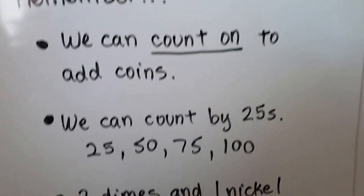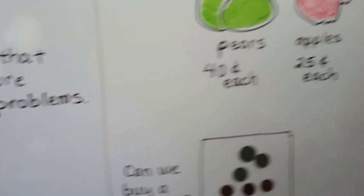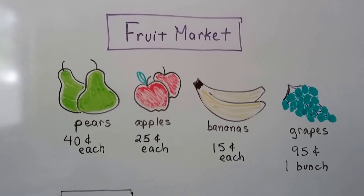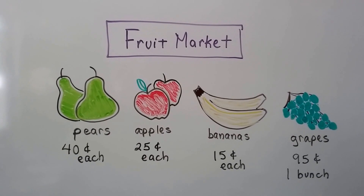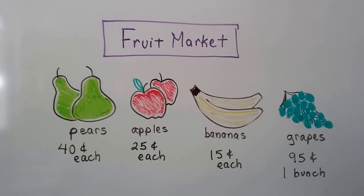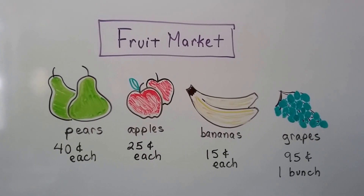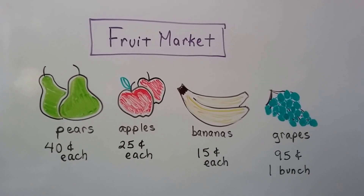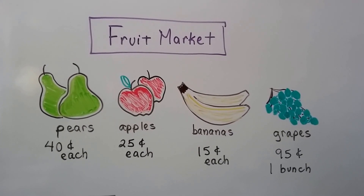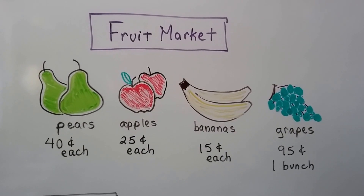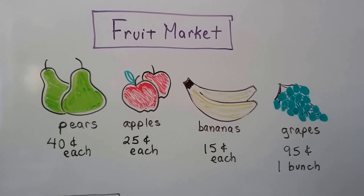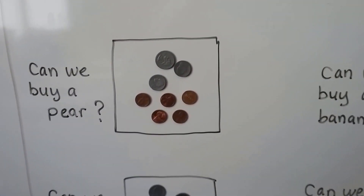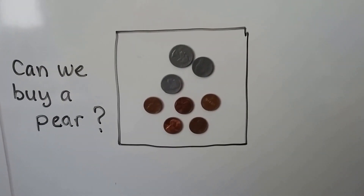Here we have a fruit market selling fruit. We have pears and they're 40 cents each, apples are 25 cents each, bananas are 15 cents each, and we have grapes at 95 cents for one bunch. Let's find out if we have enough money.